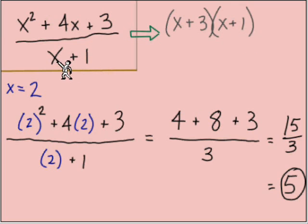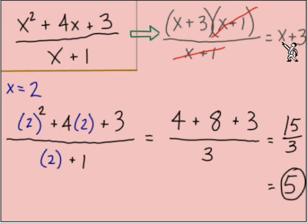The denominator, we cannot factor x plus 1 any further, it is what it is. And now thinking about what can we cancel, we have these binomial factors that match up, x plus 1 in the numerator with x plus 1 in the denominator, those are canceled, and our simplified answer is x plus 3.